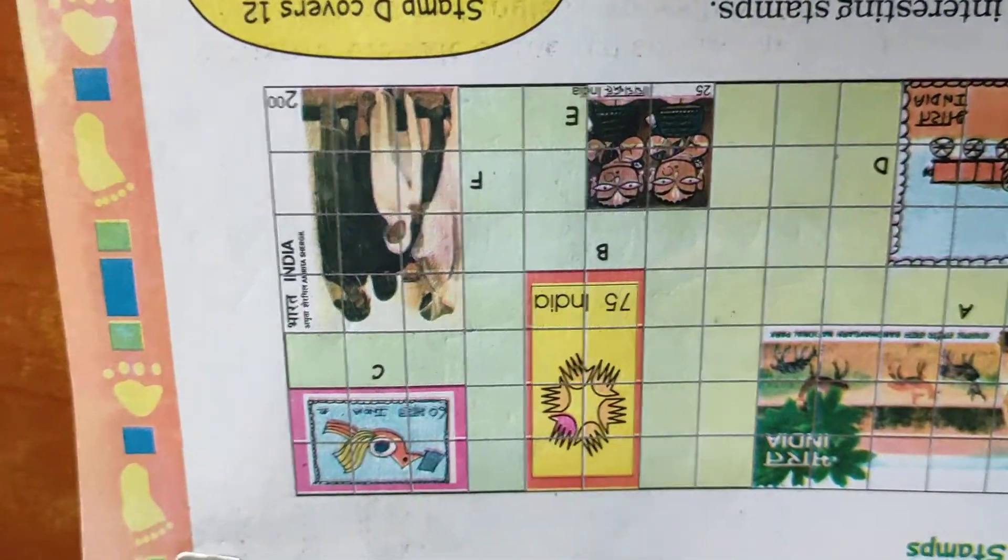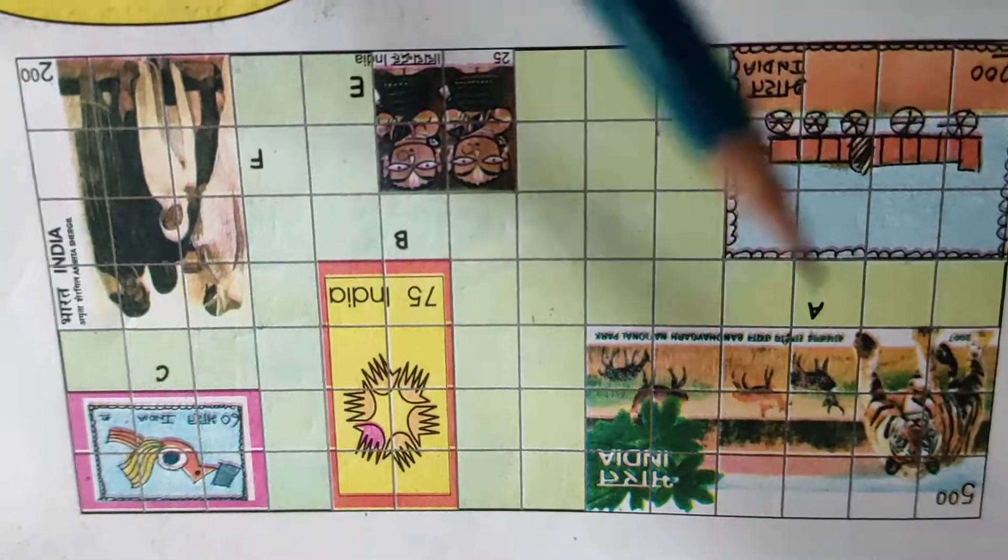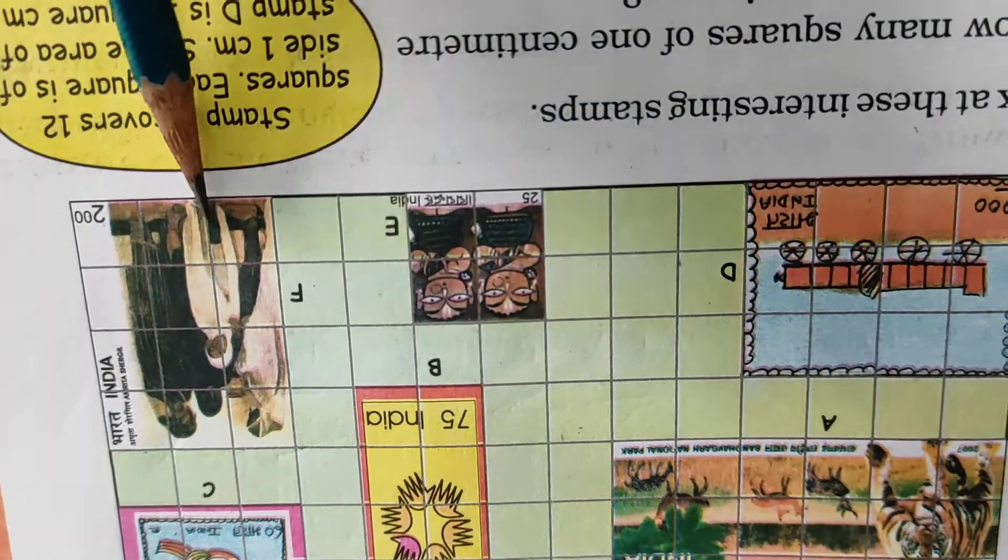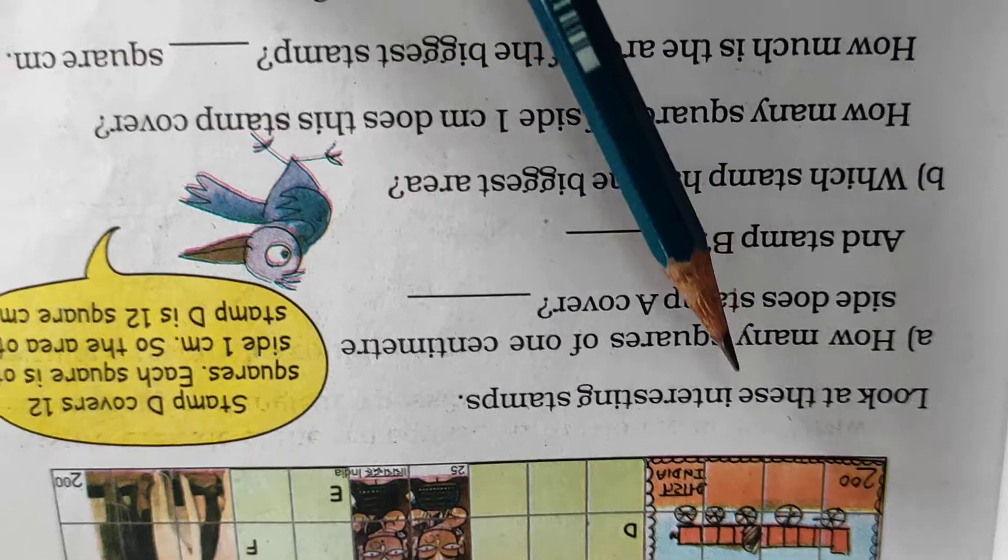Now you can see page number 35. See here stamp. Now here it is.